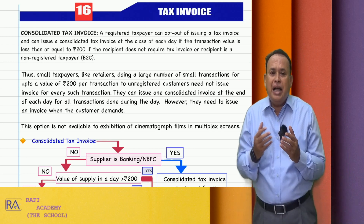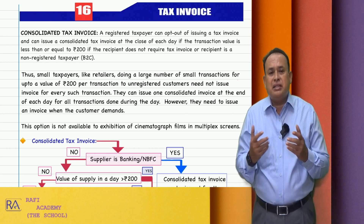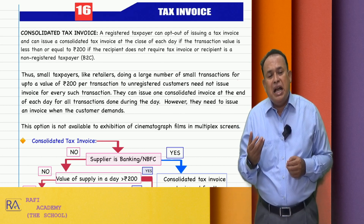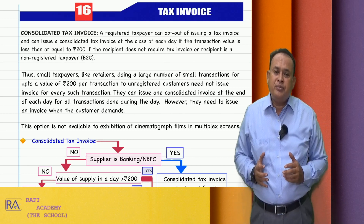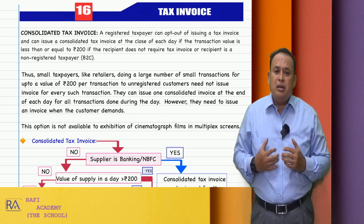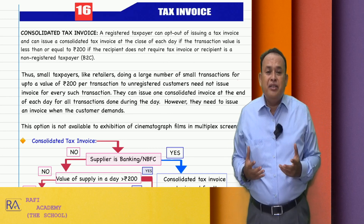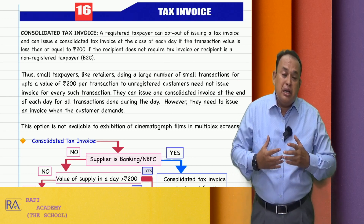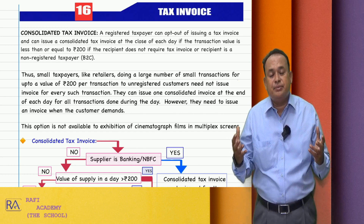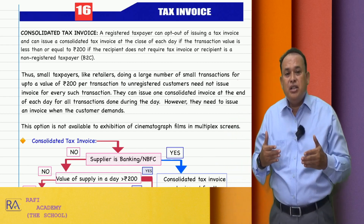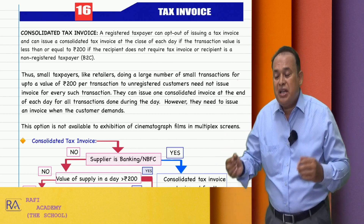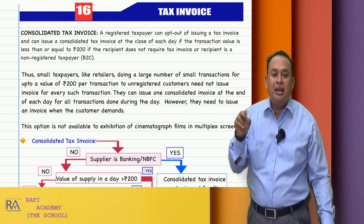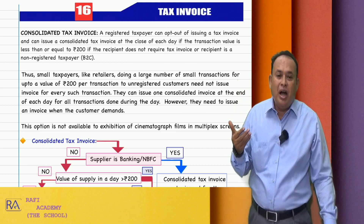Assume a scenario. I am Mr. Ramachandran, carrying supply of goods, having a small Kirana shop — Ramachandran and Company. I am a very small person dealing with small-value transactions, but huge in number. I am a small person dealing with more number of transactions where the value per transaction does not exceed rupees 200.